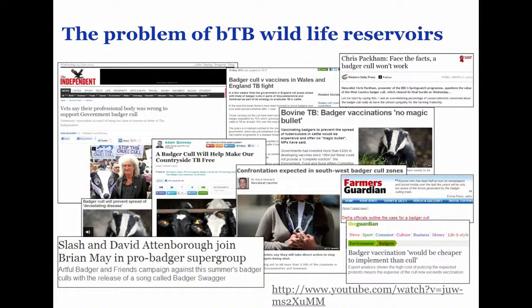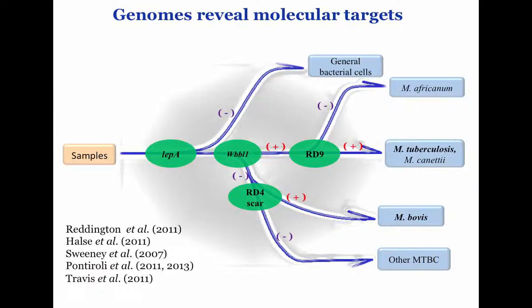We've got to try and solve this problem because we love our wildlife — we've got very little of it left. But of course we are losing millions and millions of pounds in compensation for farmers when they have to cull their herds and remove reactor animals that are positive for bovine TB.